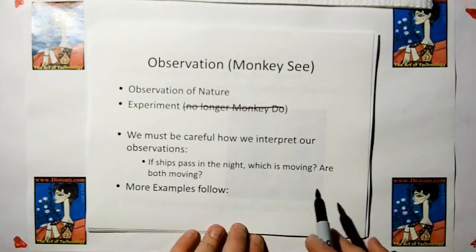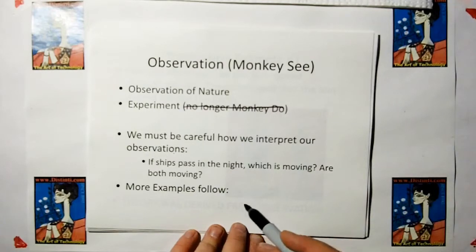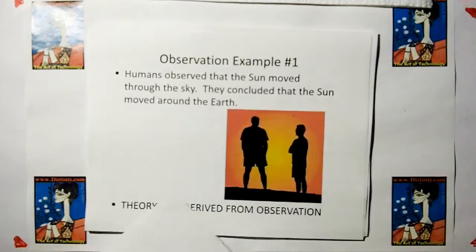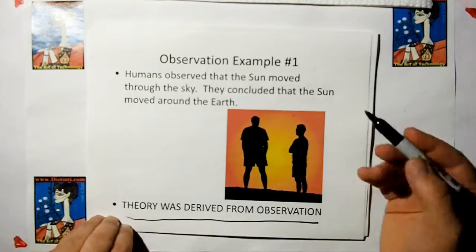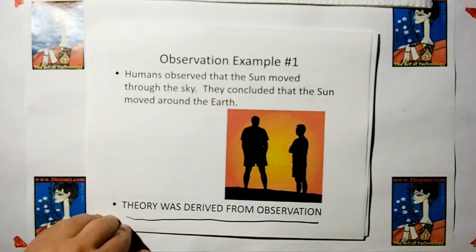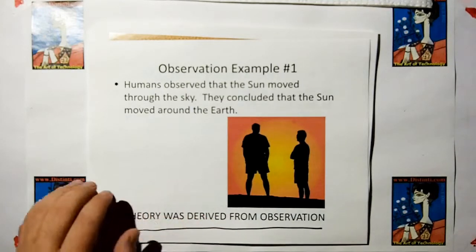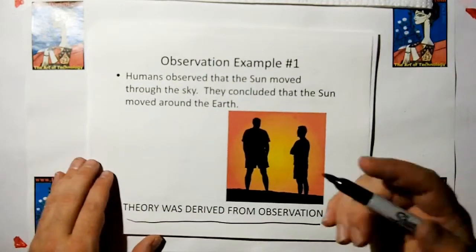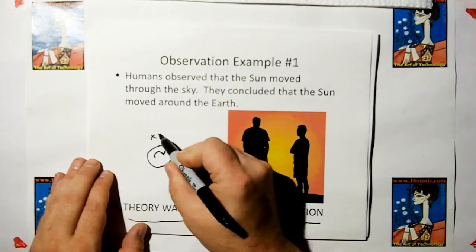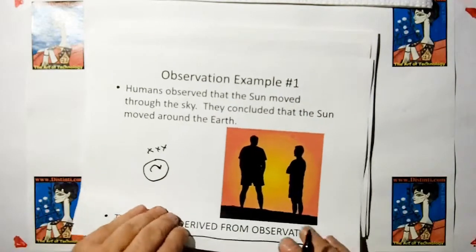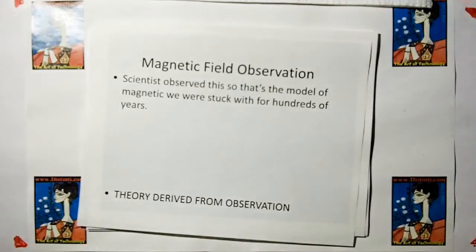Observations are monkey see. We observe nature in experiments now. But we have to be careful how we interpret our observation. For example, if a ship passes in the night, which is moving? Or are both moving? If humans observe that the sun moves through the sky, they conclude that the sun moves around the earth. This is a theory that was derived directly from observation. Observation became the theory and it was wrong.